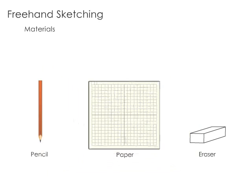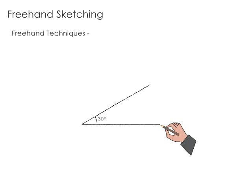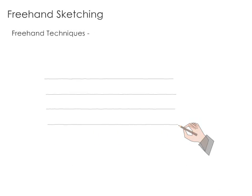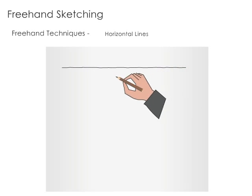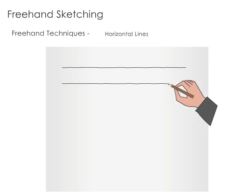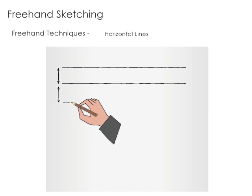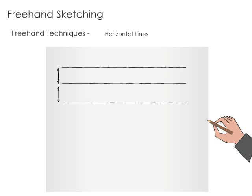Now let's see the techniques used in sketching the geometric shapes. The horizontal lines are sketched from left to right with an easy motion. The parallel lines should be drawn at an equal distance in one stroke.